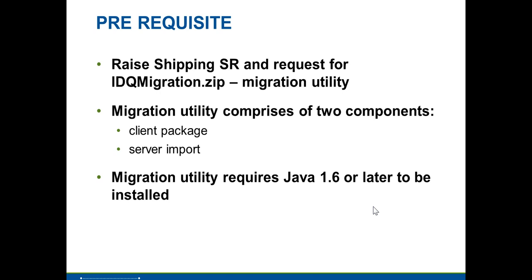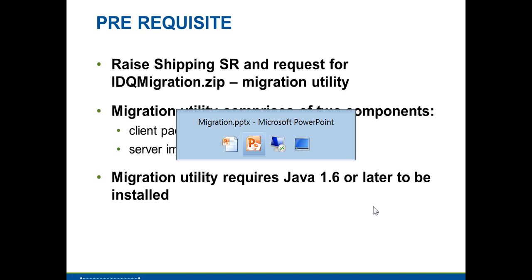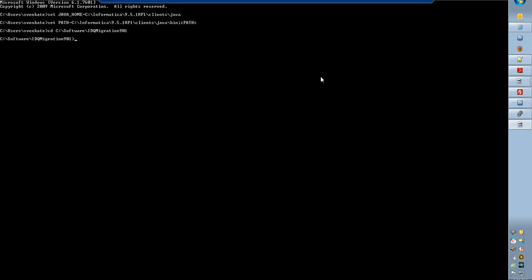The migration utility itself requires Java 1.6.0 or later to be installed. You need to set Java home on the machine where you are trying to run the client package or the server import.